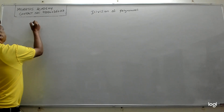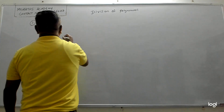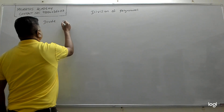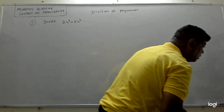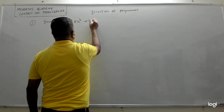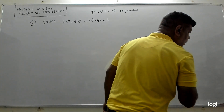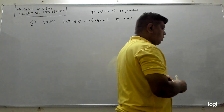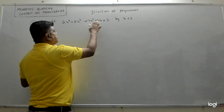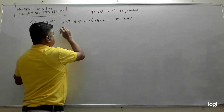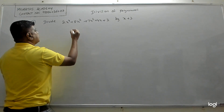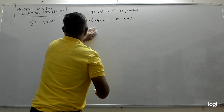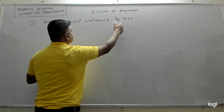We will take the first problem. Suppose the question is: divide 2x⁴ + 8x³ + 7x² + 4x + 3 by x + 3. We are going to divide this polynomial by x + 3. This is the dividend and this is the divisor which is going to divide it.